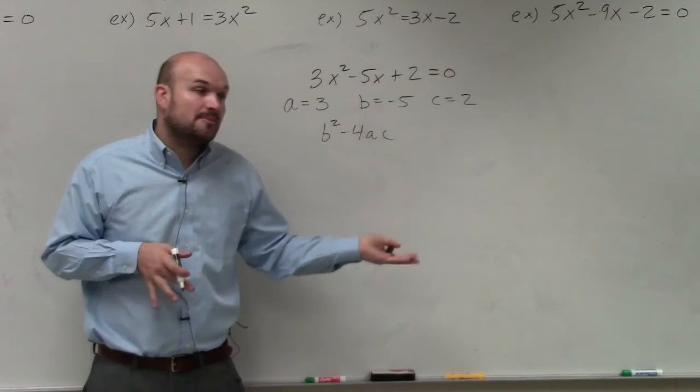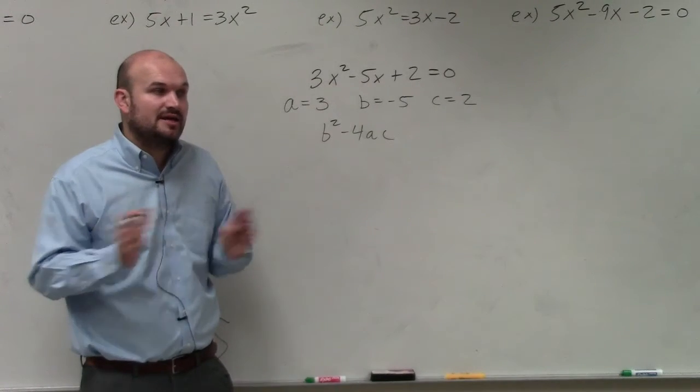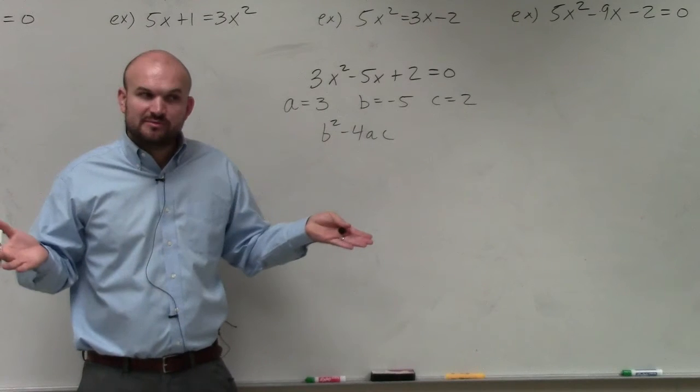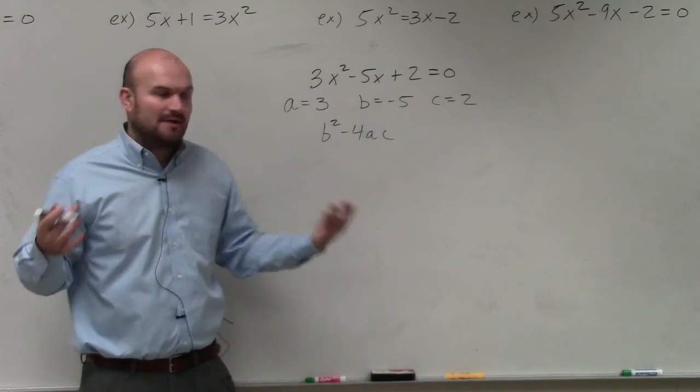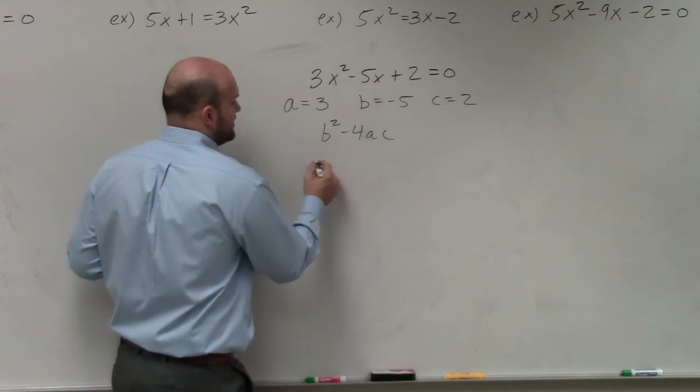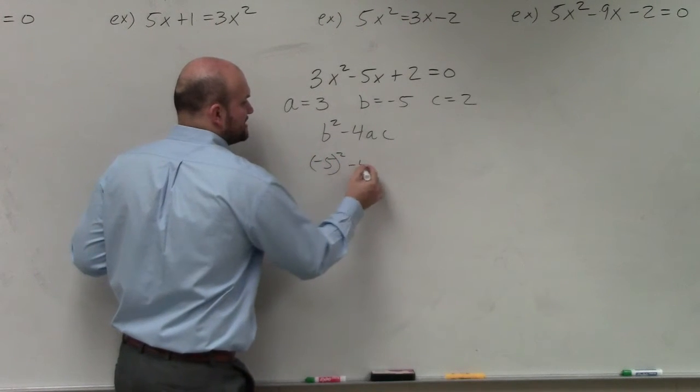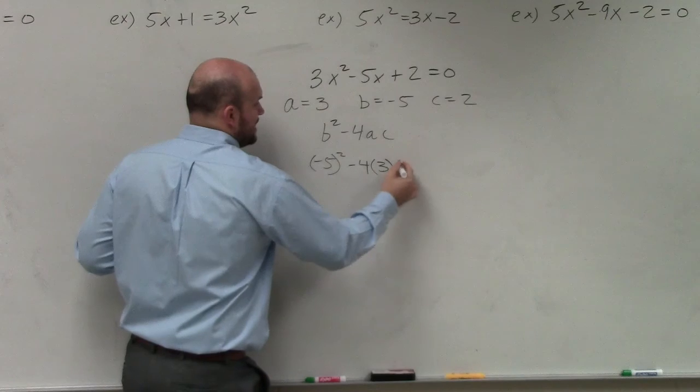When you plug in numbers, one of the biggest mistakes students make is not using parentheses. Make sure you put parentheses around the numbers you plug in for your variables. That will help avoid a lot of issues. So that's (-5)² minus 4 times a times c.